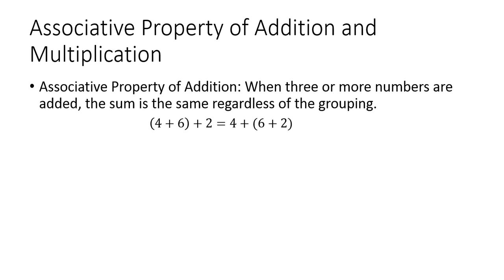So let's look at this example. We have parentheses around the four plus six, and then we have plus two on the outside. What the associative property of addition says is that it's going to be the same even if we put parentheses around the six and the two. We didn't change the order here — we just changed the grouping.